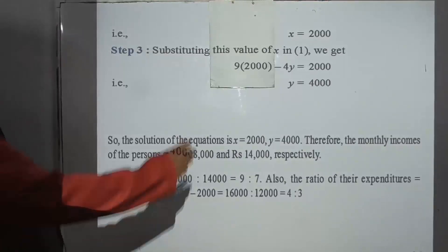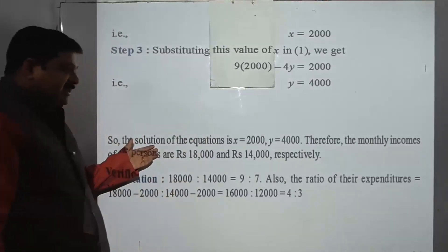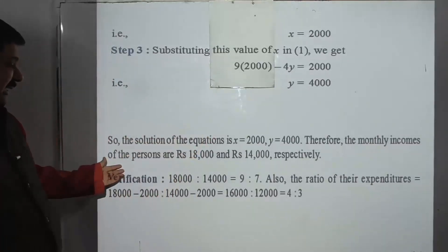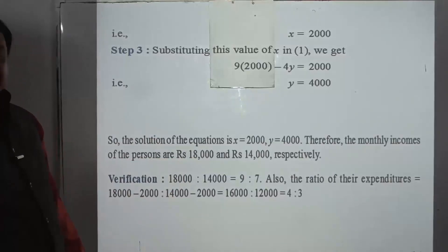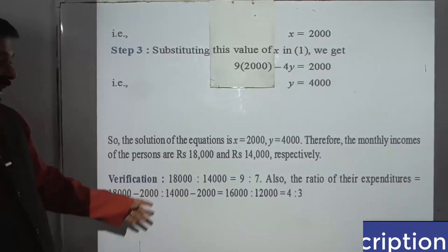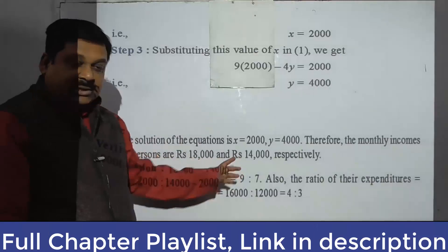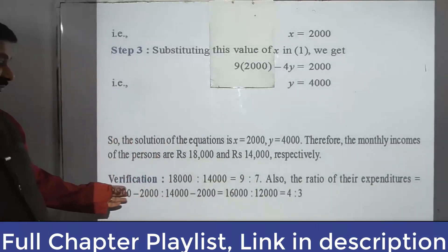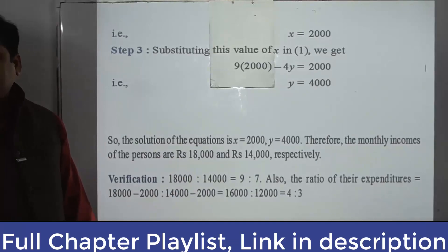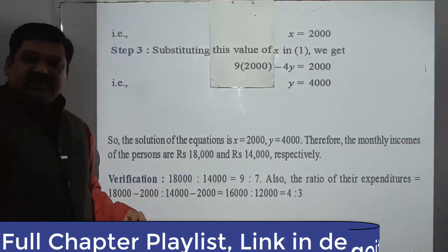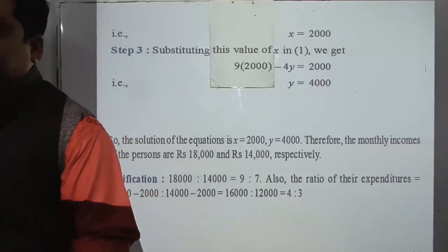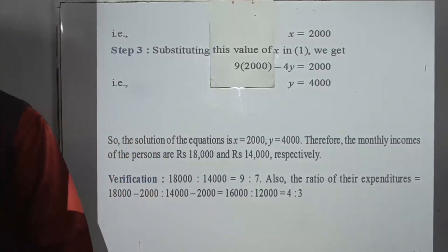So x equals 2000 and y equals 4000. The first person's monthly income was 9x, which is 9 times 2000 equals 18000, and the second person's is 7x equals 14000. It's a simple question — with a little practice you can score very well. Practice is what's needed.